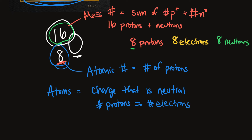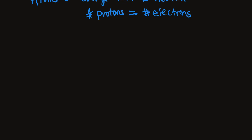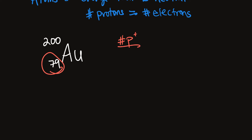Let's do another example — let's go back to gold. Gold has the atomic symbol AU. Let's say its mass number is 200 and its atomic number is 79. Let's figure out the number of protons, neutrons, and electrons. The atomic number tells you the number of protons, so we have 79 protons. Since this is an atom, atoms always have the same number of protons as electrons, so we have 79 electrons.